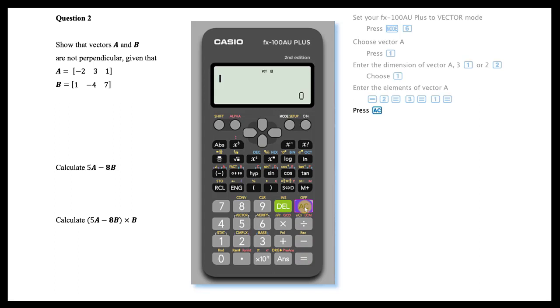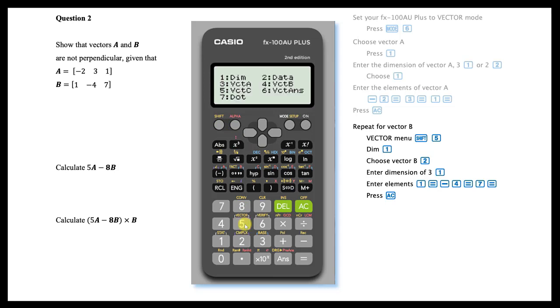Press AC if you wish to clear the screen. Repeat this process to define vector B. First open the vector menu by pressing Shift and 5. Choose Dim for dimension. Choose vector B. Enter its dimension as 3, and then enter B's elements. Press AC.